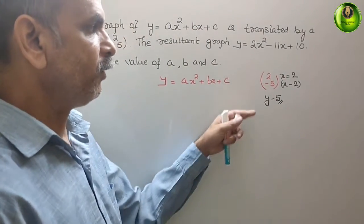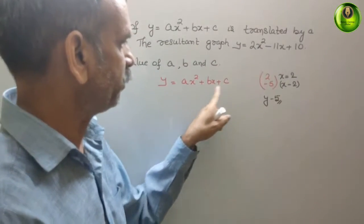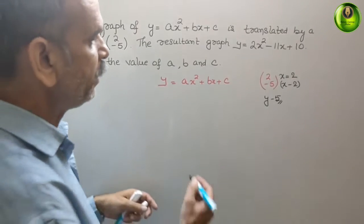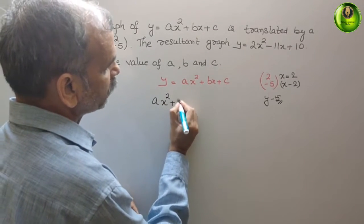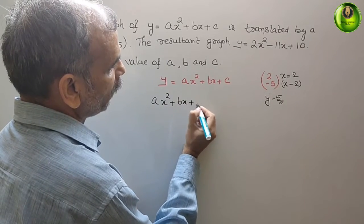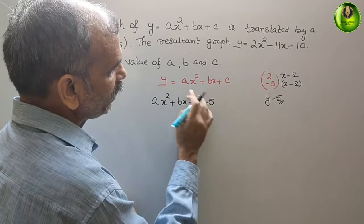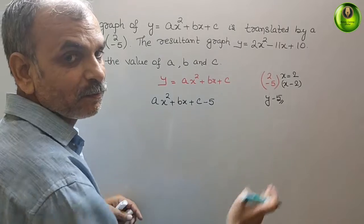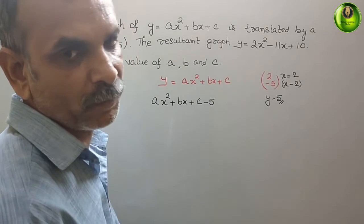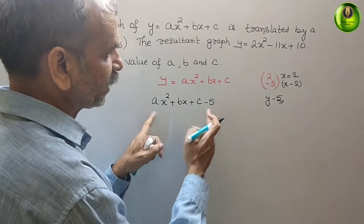Now we will substitute one by one. If we go for minus 5, what it will be? It will be ax² plus bx plus c minus 5. This is your y, and we have to subtract 5 from here. So the equation will come like this.